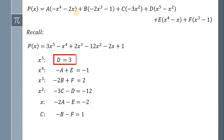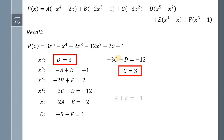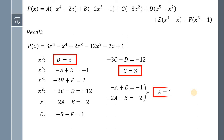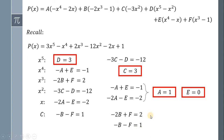We already know that D is equal to 3. Using the equation negative 3C minus D is equal to negative 12, and letting D equal 3, we get C is equal to 3. Next, using the equations negative A plus E equals negative 1 and negative 2A minus E equals negative 2, and using the elimination method, we get A is equal to 1 and E is equal to 0. Similarly, using the equations negative 2B plus F equals 2 and negative B minus F equals 1, we get B is equal to negative 1 and F is equal to 0.